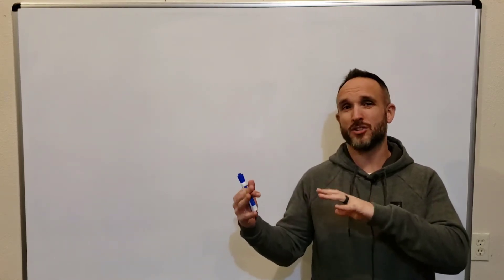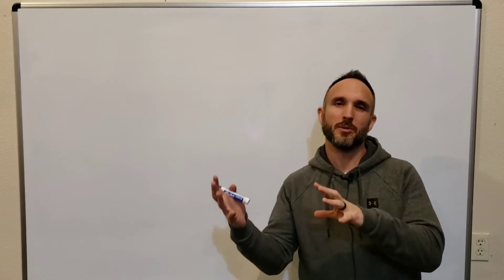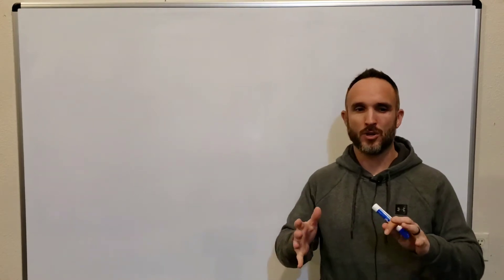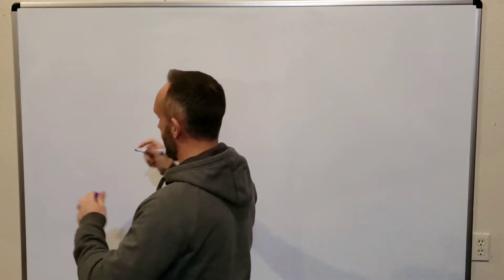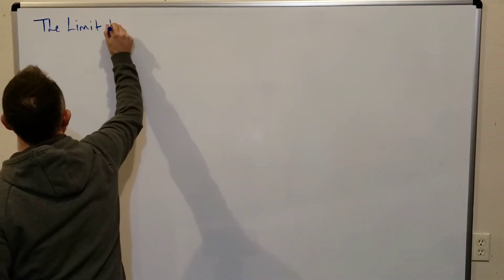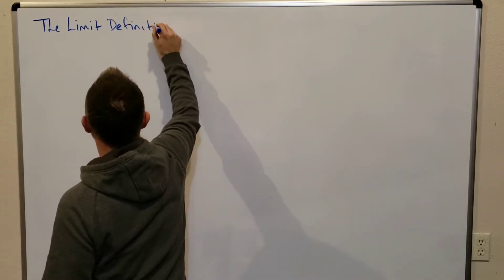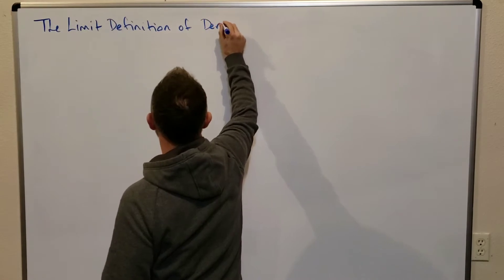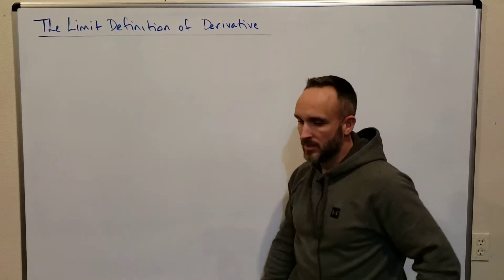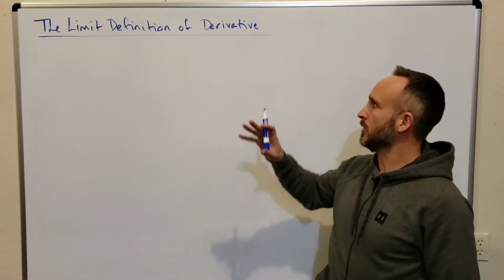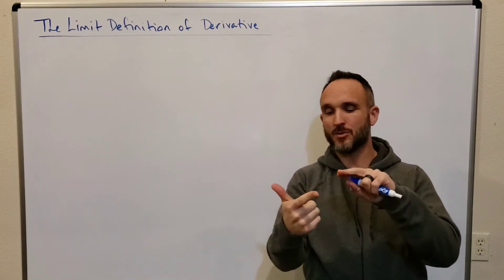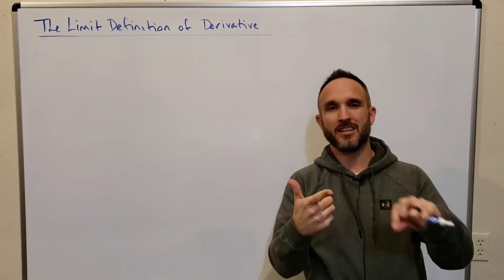We're going to transition from the first phase of calculus, which is limits, to the second phase of calculus — the big topic of derivatives. In this video, we're going to make that transition and look at the limit definition of the derivative. We'll start with secant lines, then move to tangent lines, and that's going to lead us to derivatives.